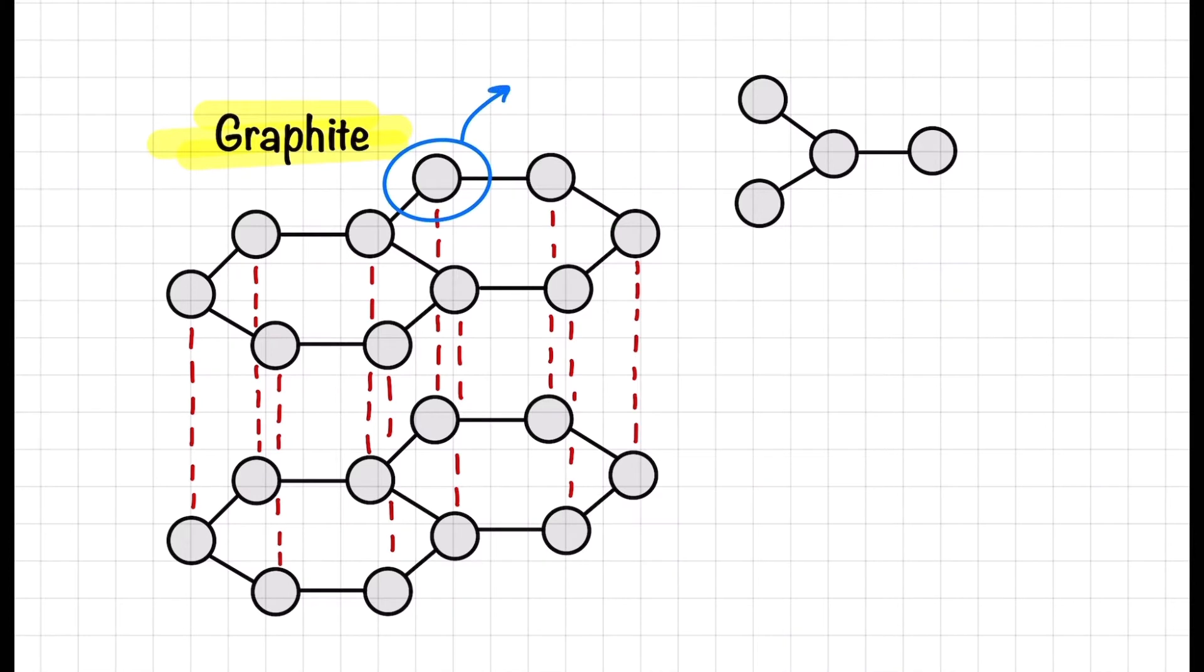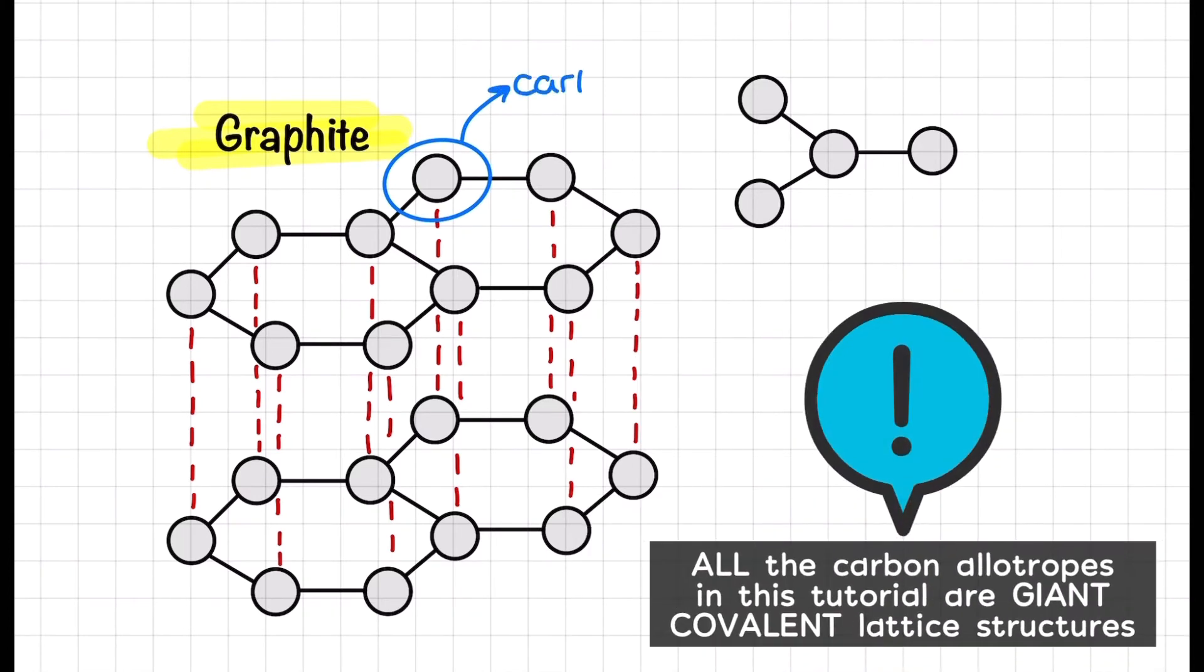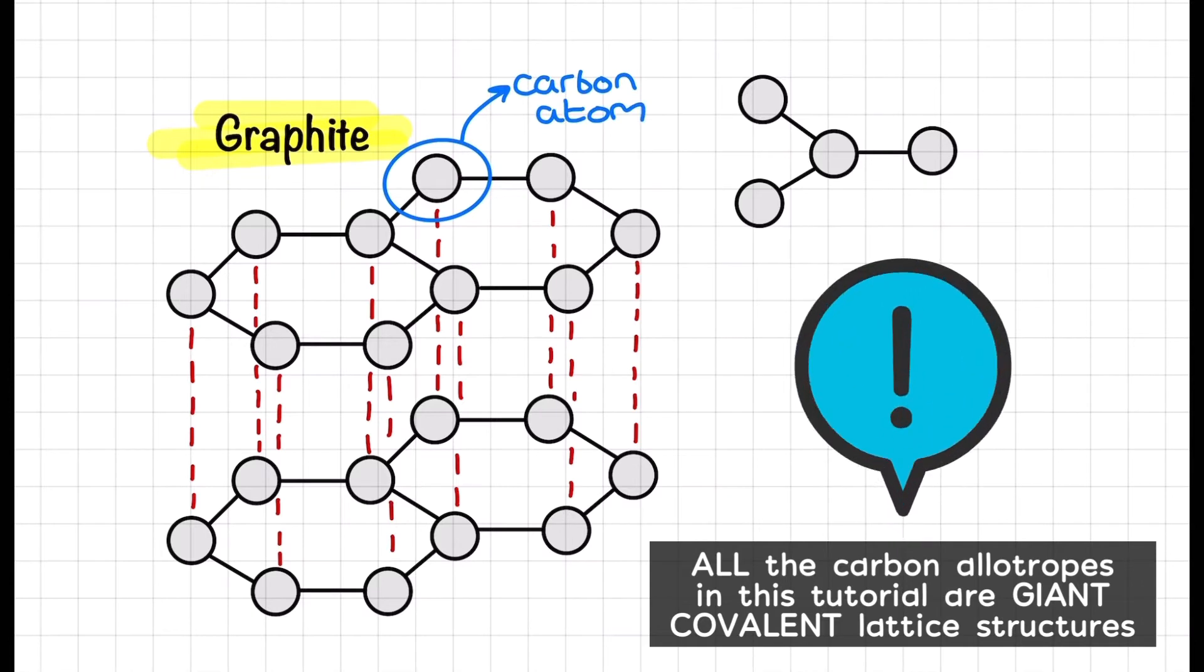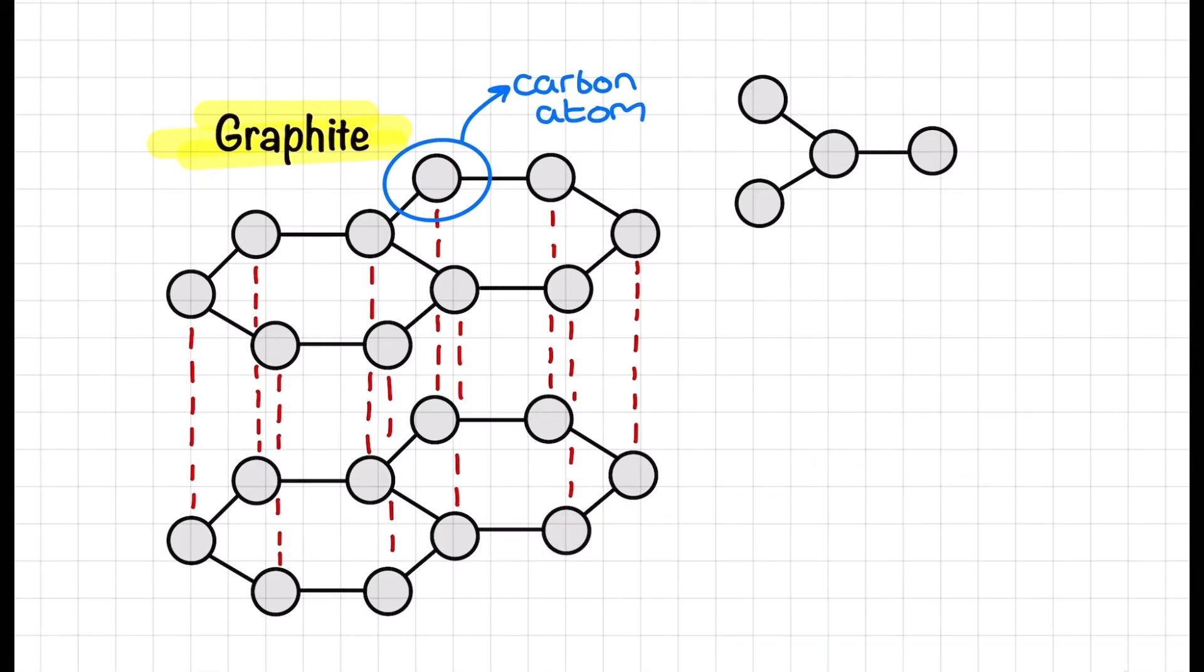We're going to kick things off here with graphite. Graphite is one of the most common allotropes of carbon that we also encounter at GCSE. Here we have carbon atoms connected together by covalent bonds in hexagonal layers and the layers are connected together by London forces.